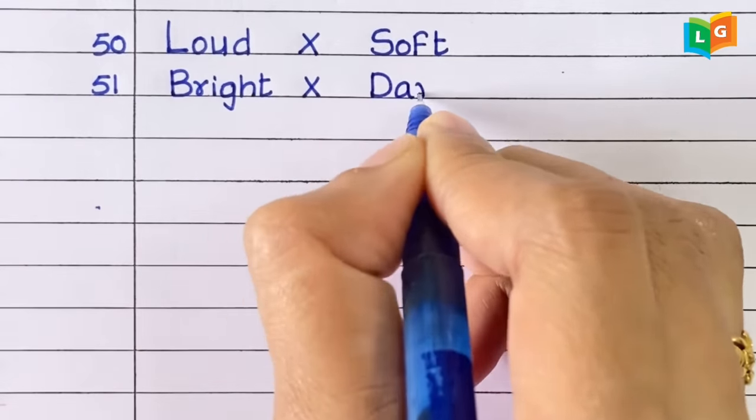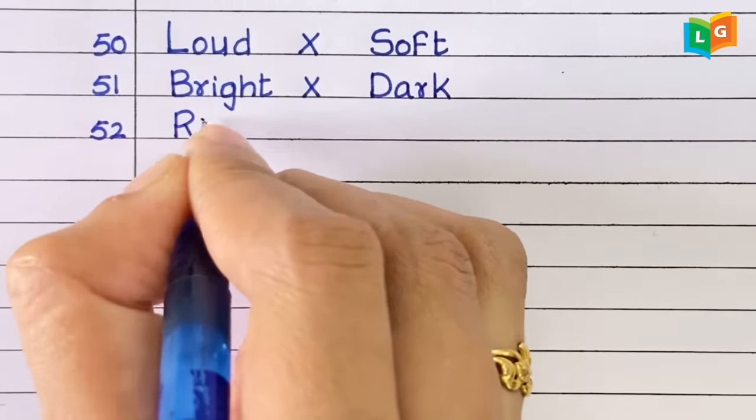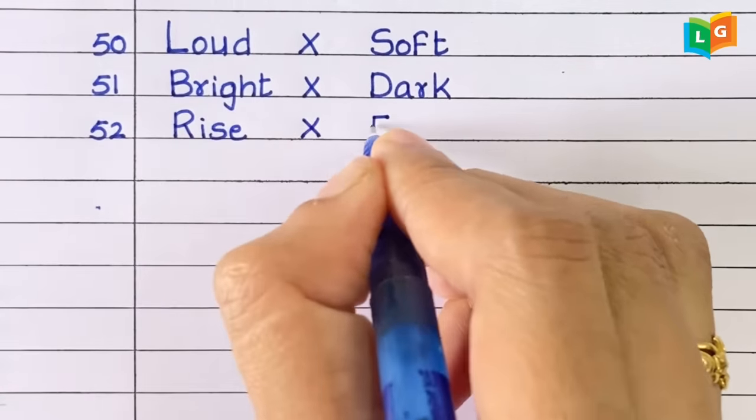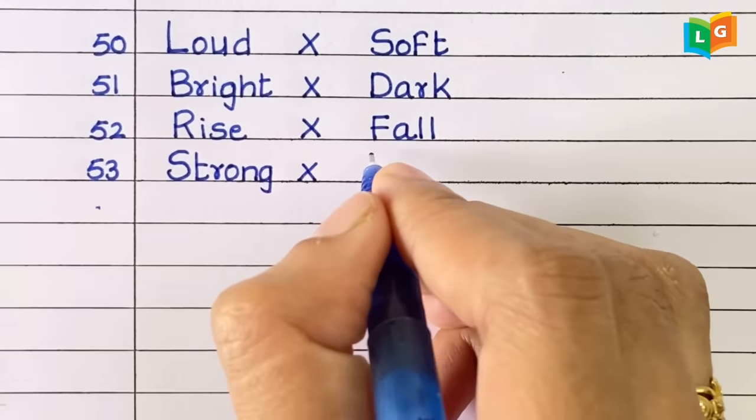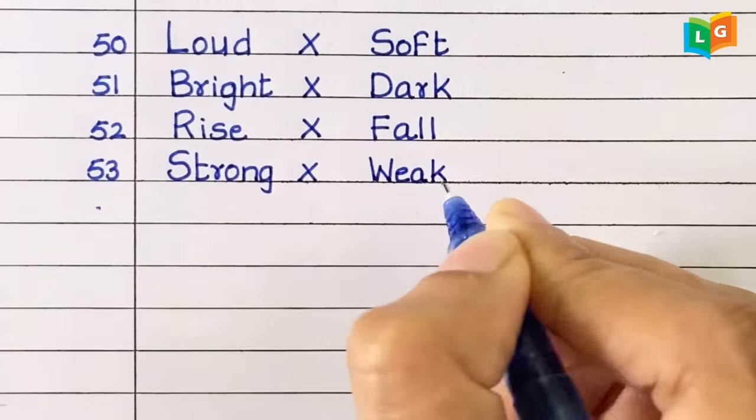Fifty-one, bright, dark. Fifty-two, rise, fall. Fifty-three, strong, weak.